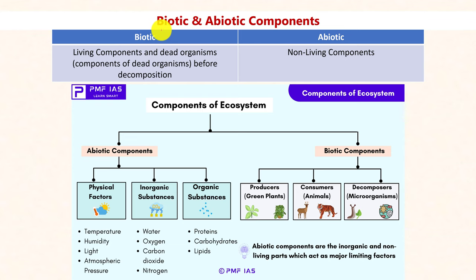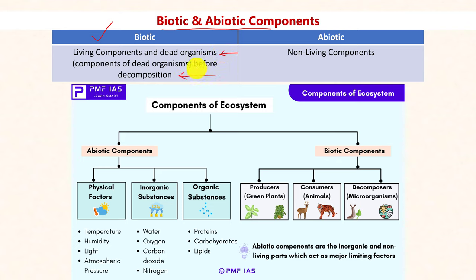Throughout this video, we will encounter the terms biotic and abiotic components. Biotic components are synonymous to living components. They also include derivatives of living components like dead organic matter before decomposition. Any organic matter before it undergoes decomposition can be considered a biotic component. After decomposition, biotic components are broken down into molecules like oxygen, compounds like water, and individual elements like carbon, nitrogen, etc. — all of which are non-living, or abiotic, components.